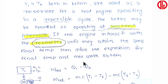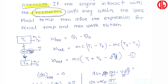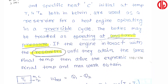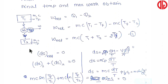We need to derive the expression for the final temperature and the maximum work obtained. In the diagram, there are two identical bodies — equal mass and equal specific heat capacity. One has temperature T1 (higher) and the other T2. A reversible heat engine is operating between them. We have to find the maximum work we can extract and the final temperature.